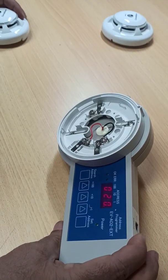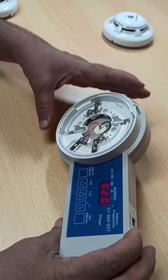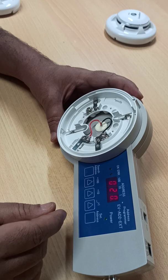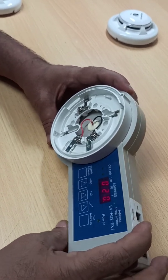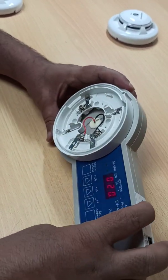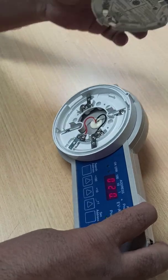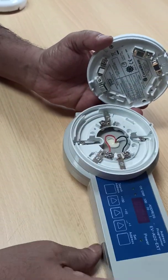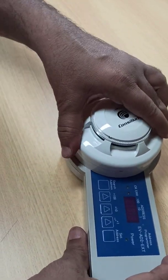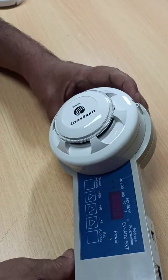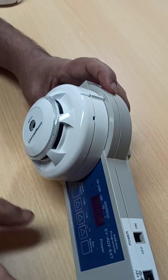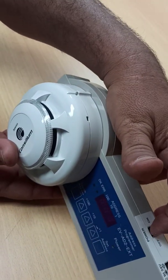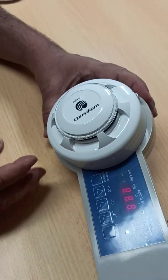I will take one more time this detector and switch off this instrument. I switched off the instrument. I connect this fire detector on the base and I will switch on the instrument and we will see the address.